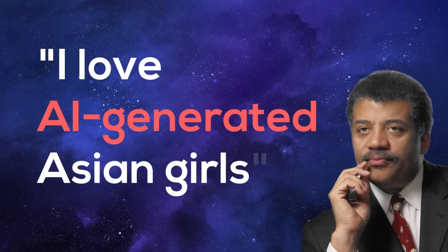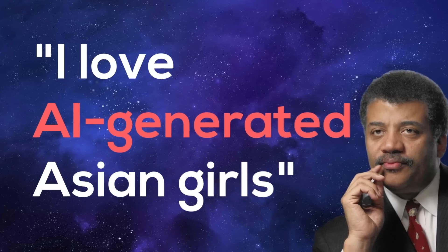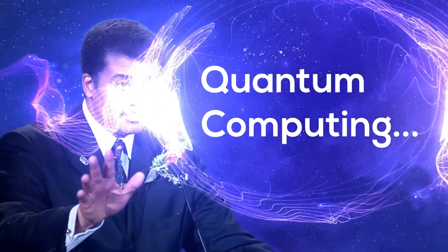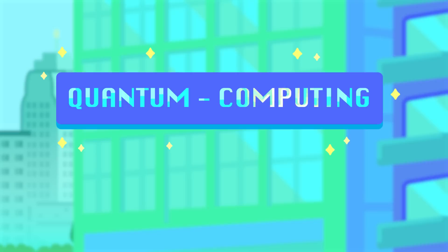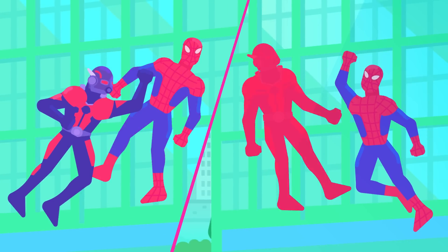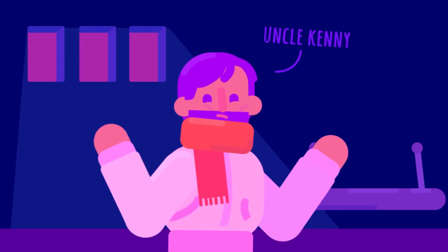Neil deGrasse Tyson is most famous for saying that he loves AI-generated Asian girls. But what has often gone under the radar is another profound quote from him, which is Quantum Computing. Yeah, I don't know. He just stopped there. Quantum Computing, the core of movies like Ant-Man and Into the Spider-Verse, and rumored to harness the power of parallel universes changing the world as we know it today. But what actually is it, and how does it work?